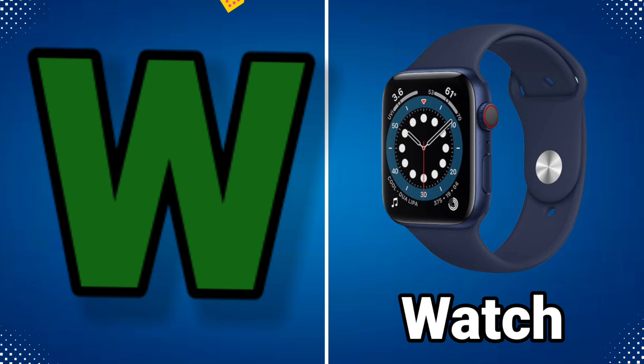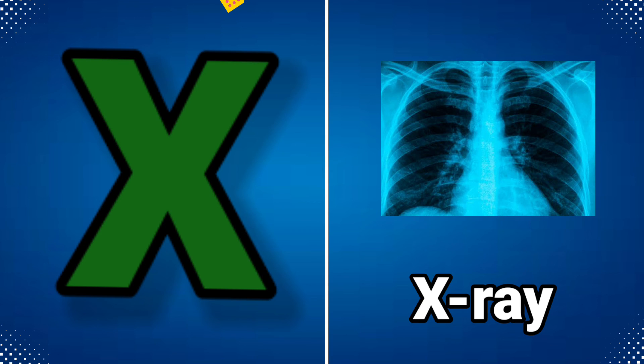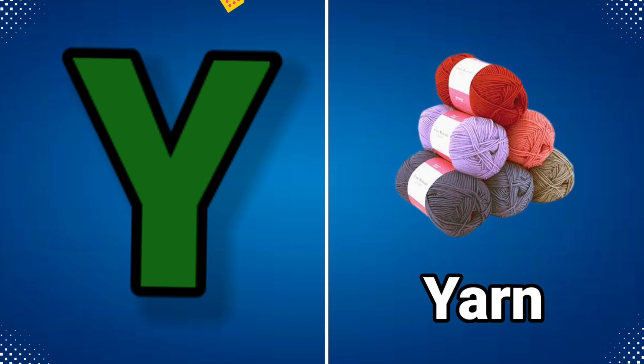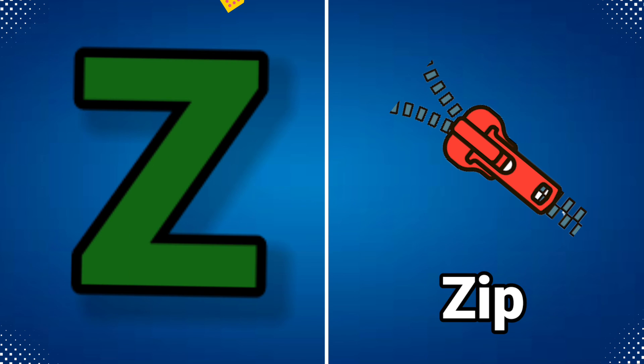W for watch, X for x-ray, Y for yarn, Z for jeep.